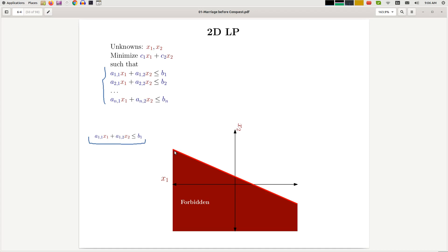Let's try to understand what this constraint means. If I pick a point (x1, x2), this point satisfies this constraint if this inequality is true. What this means is that it should not be the case that a11*x1 + a12*x2 should be bigger than b1. In other words, this is forbidden.